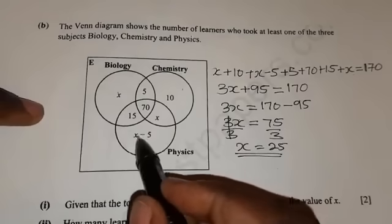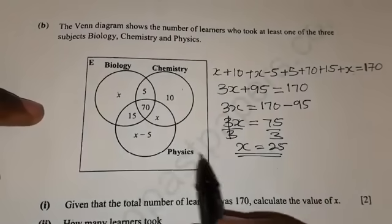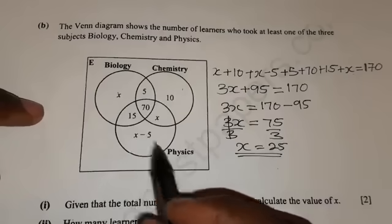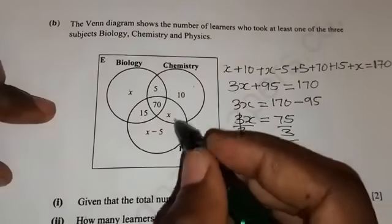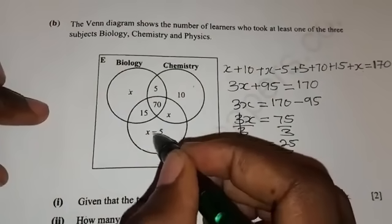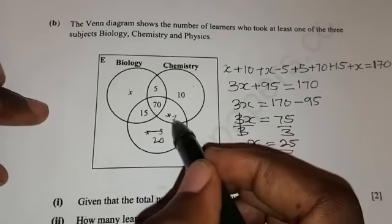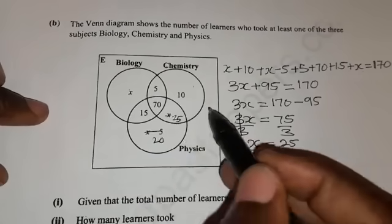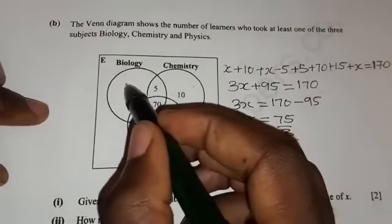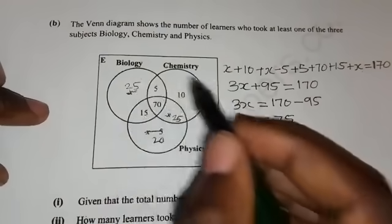So this is the value of x. Meaning everywhere where there is x, you replace it with 25. So here if we say 25 minus 5, we are going to remain with 20. Let's cancel this and put 25 because x is 25.